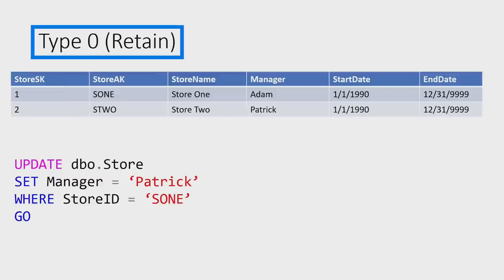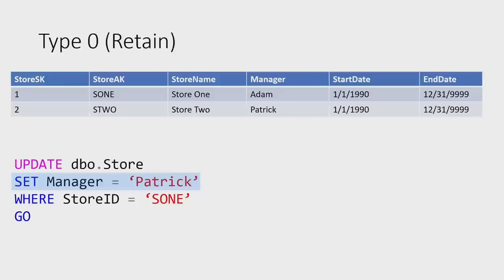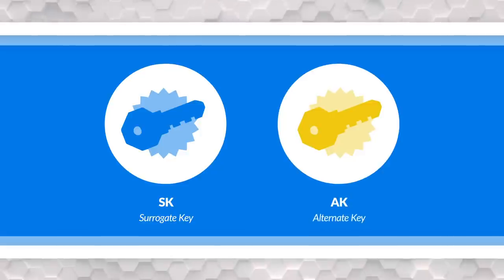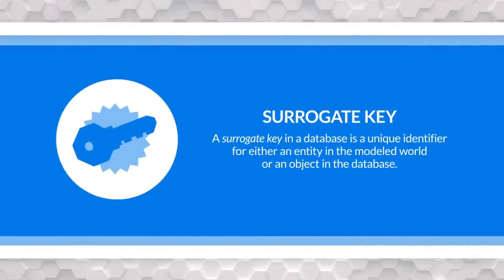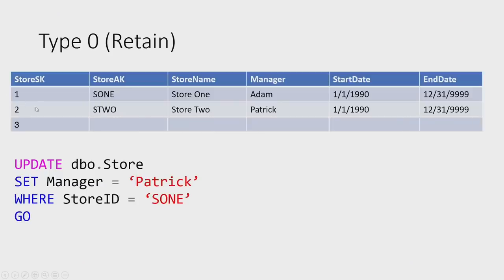Type zero is often referred to as retained. If I do an update on my source — this is the store table in my source database — once I do that update, nothing happens. So if I'm updating store ID S1 and I change the manager to Patrick, I don't update it in the data warehouse. It's always going to keep the exact same name. Every time you add a row to your dimension, there's typically a surrogate key and an alternate key. The surrogate key is a primary key you generate inside your data warehouse — it's like an auto-incremented number, an identity column in SQL Server. The alternate key is the primary key from the source system. Every time you insert a row it gets a new surrogate key, but the alternate key retains those initial values from the initial load.